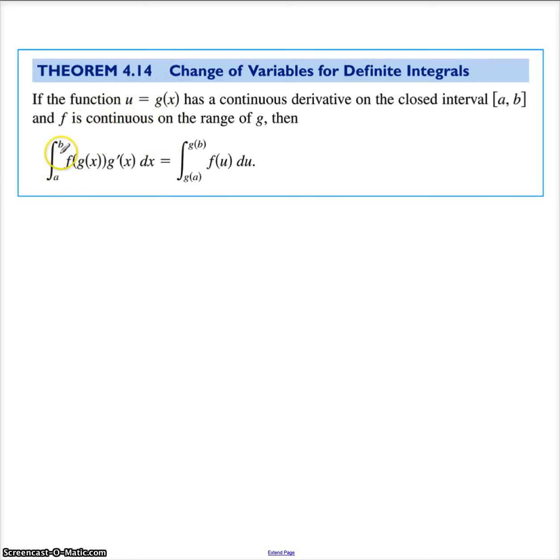Then the integral from a to b, the definite integral, of f of g of x times the derivative of g dx is equal to the integral from g evaluated at a to g evaluated at b of f of u du.